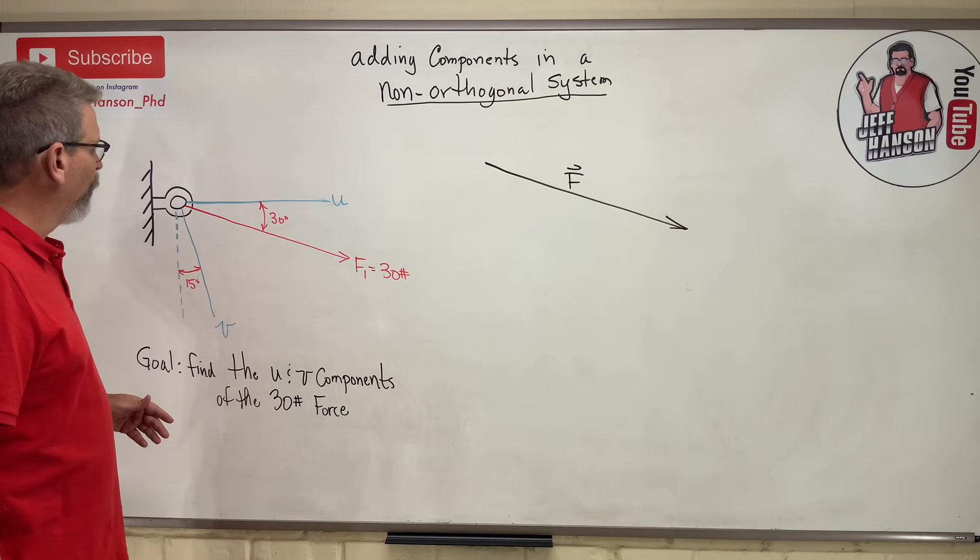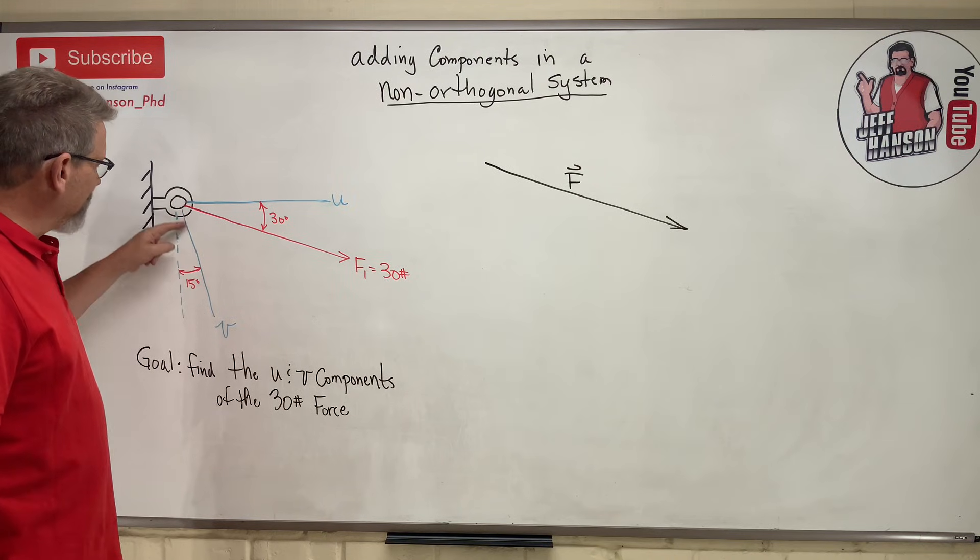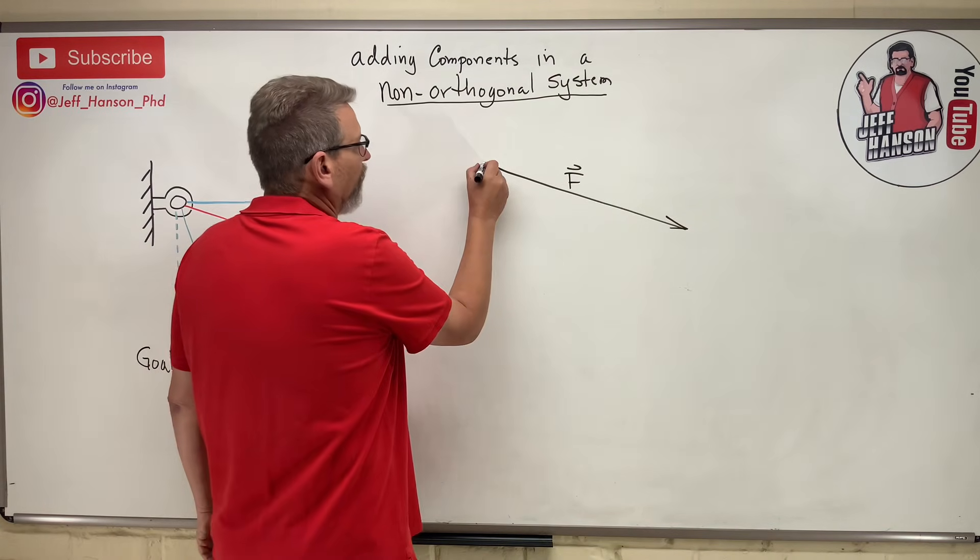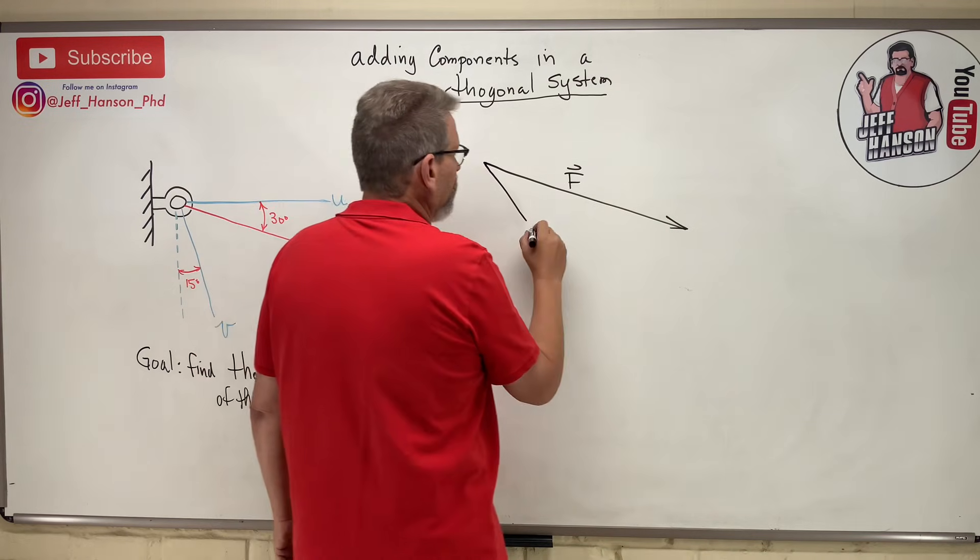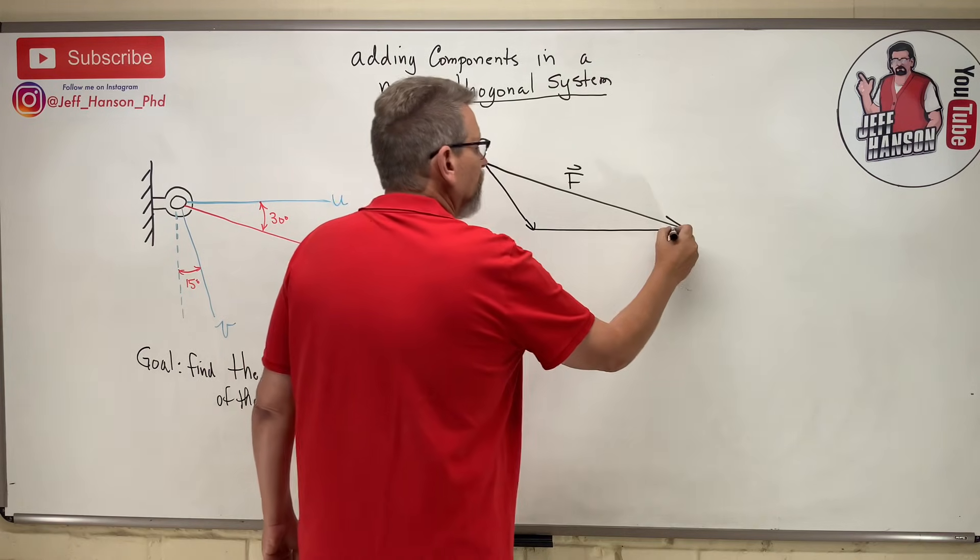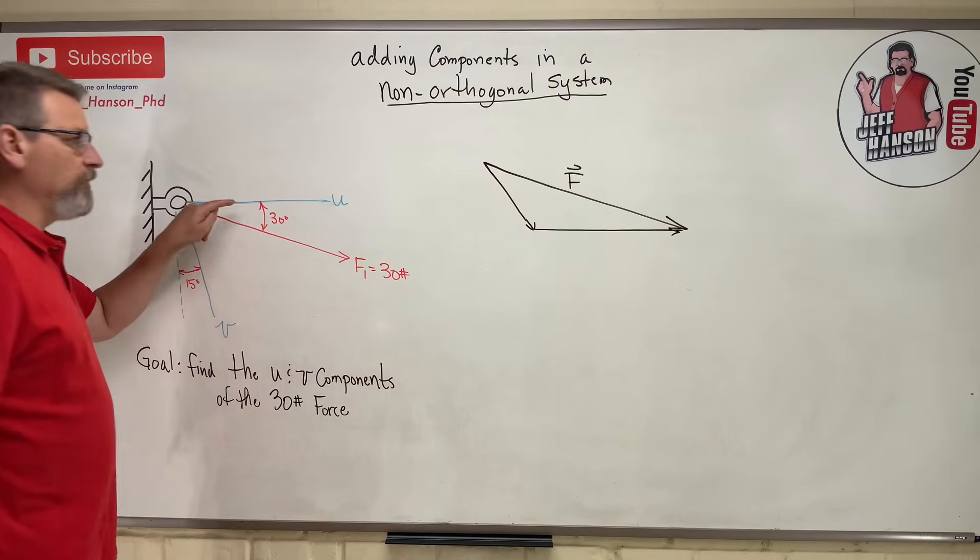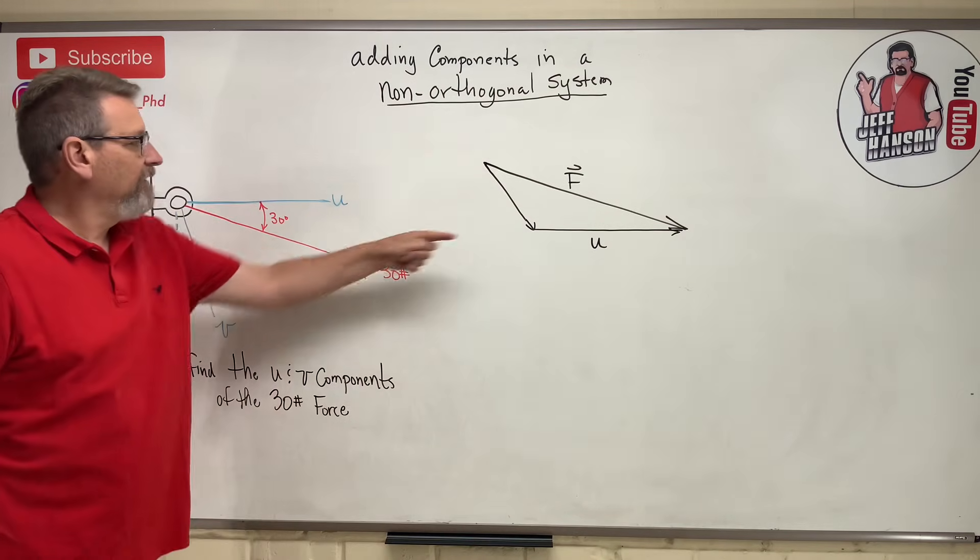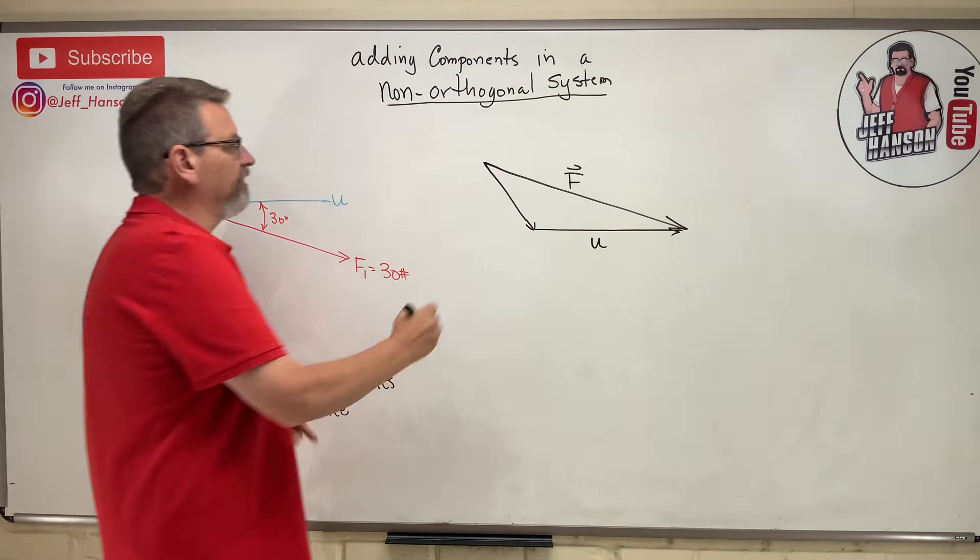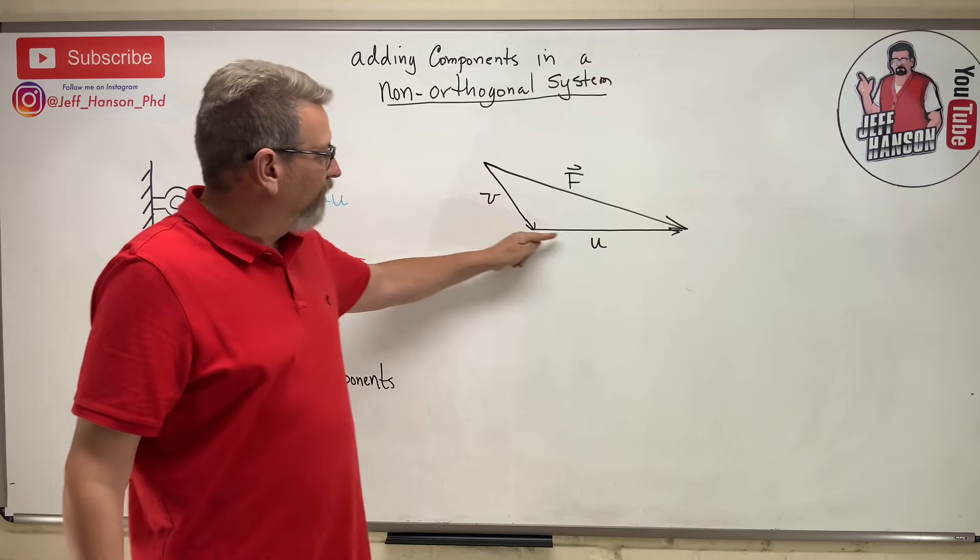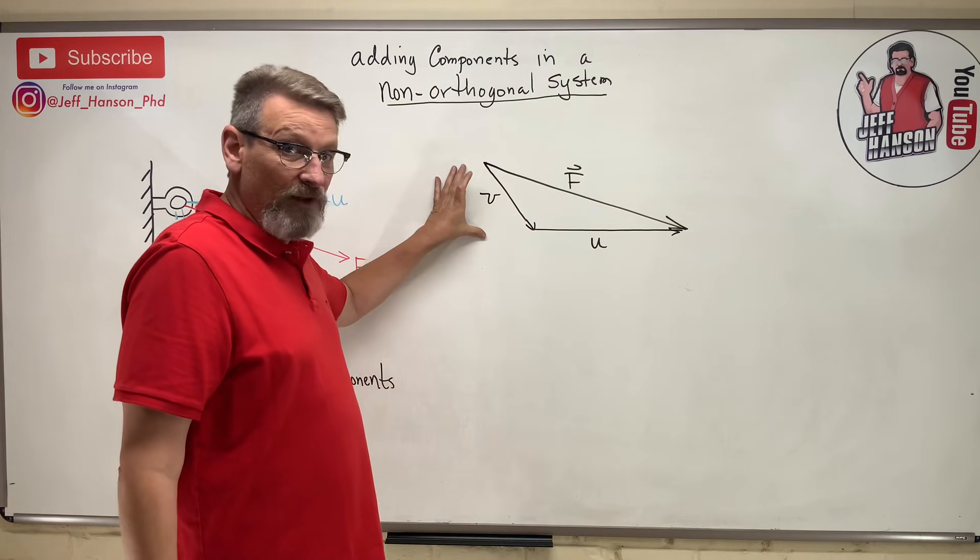So what I'm gonna do is this - I'm gonna go this way and then straight across this way, something like that. Because this side here is in the u direction, so this is u, and this side is in the v direction, so this is v. And I constructed this triangle so that v plus u are tip to tail - the components are tip to tail. Remember the triangle rule - make this guy the resultant vector.